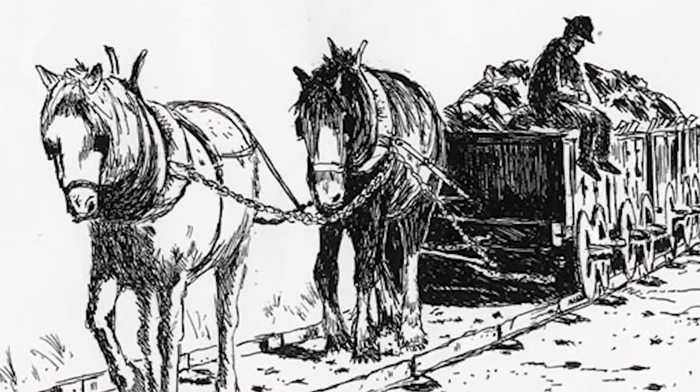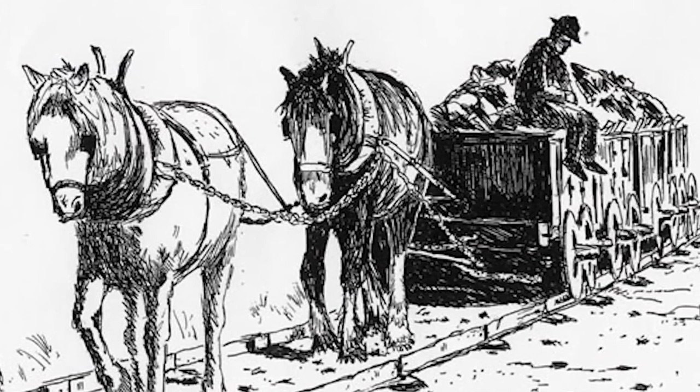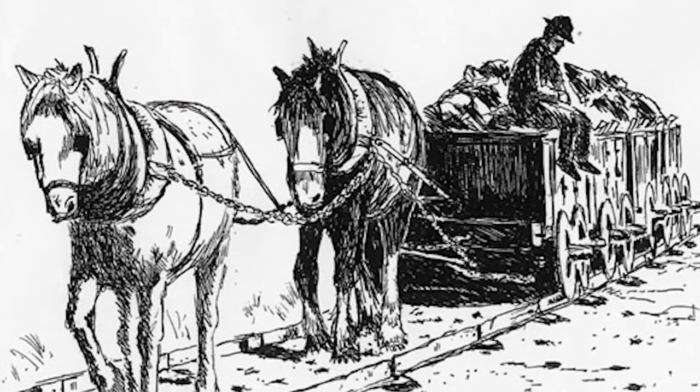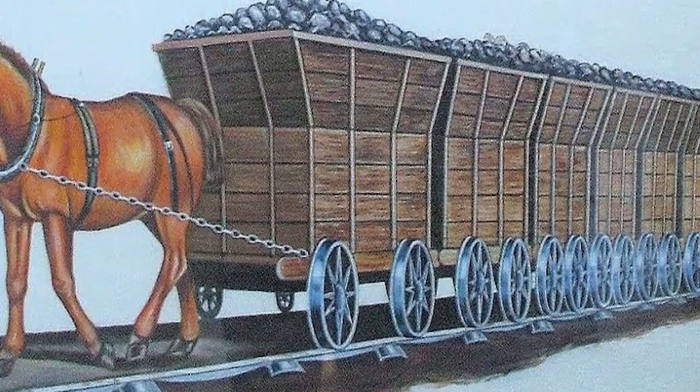They prepared long beams of wood, put them side by side, and fixed the chariots on them, and the horses began to pull them. This became the first means of transportation similar to the idea of the current train, and its name was then Fagin Way.